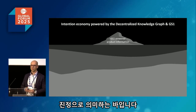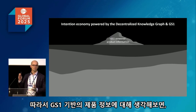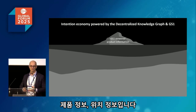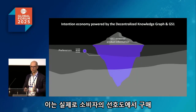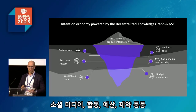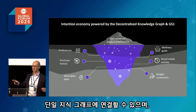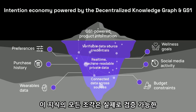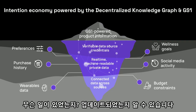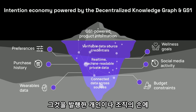This is what the decentralized knowledge graph by OriginTrail, combined with GS1 standards, is all about. GS1-powered product information — EPCIS events, product information, location data — is just the tip of the iceberg. Imagine connecting all of that with individual consumer data: preferences, purchase histories, wearables data, wellness goals, social media activity, and budget constraints — all in a single knowledge graph where every piece is a verifiable credential, so you can find out exactly who issued it, what happened to it, and whether it was updated or ownership changed.